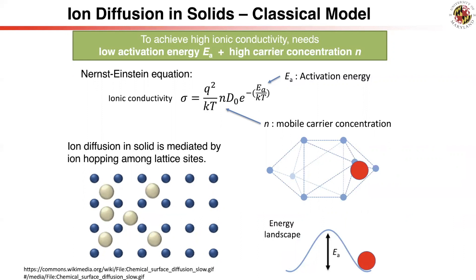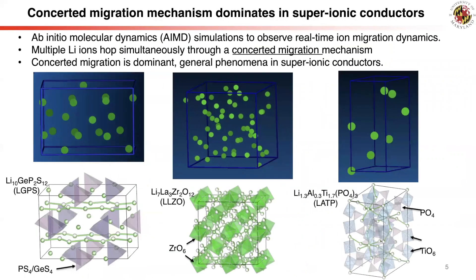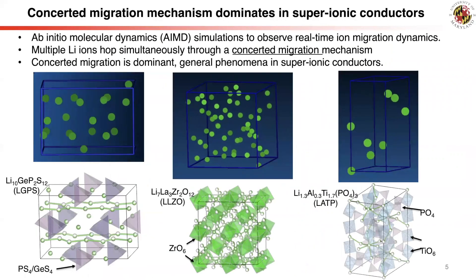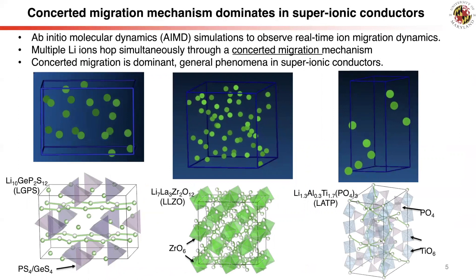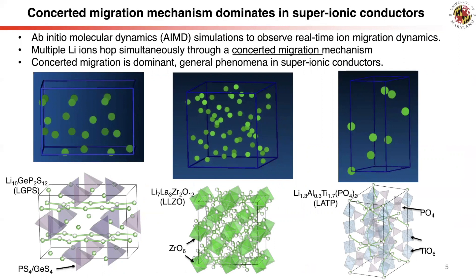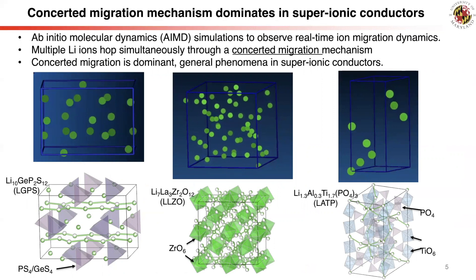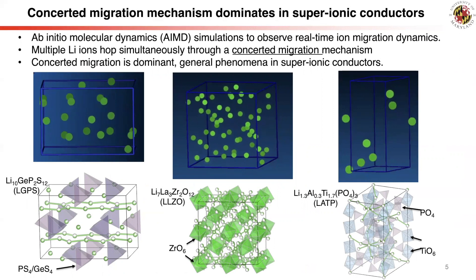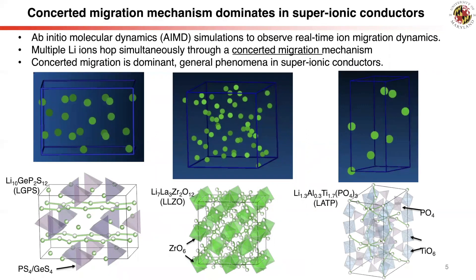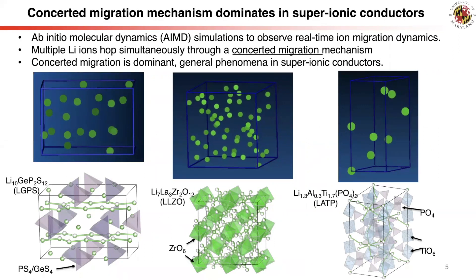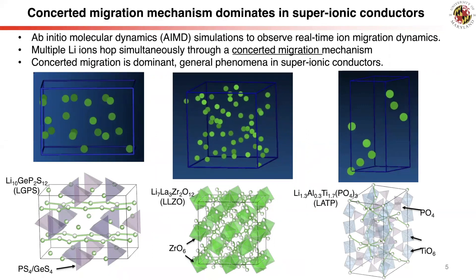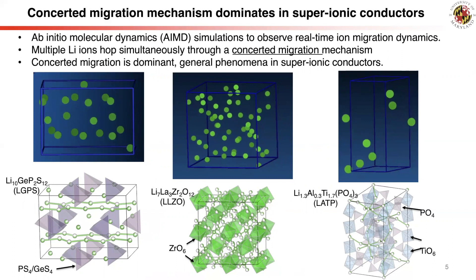So why do those few structures exhibit much faster lithium diffusion than others? We employ a computational modeling technique called ab initio molecular dynamics simulations, which allow us to directly model the real-time dynamics of atoms at a sub-femtosecond timescale, as shown in the movies for these lithium superionic conductors. We can directly observe how lithium-ion hopping happens.